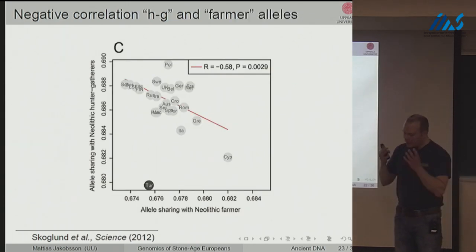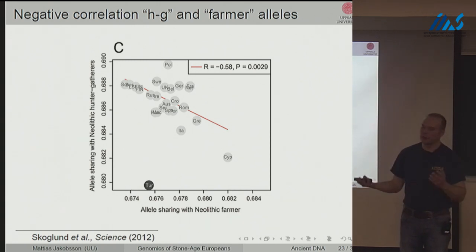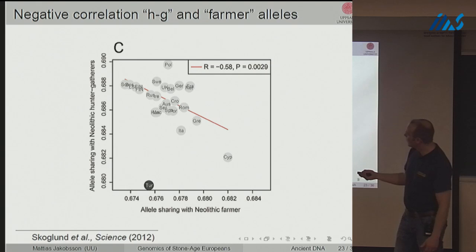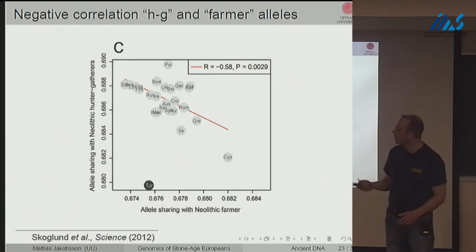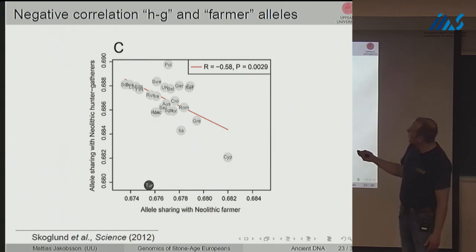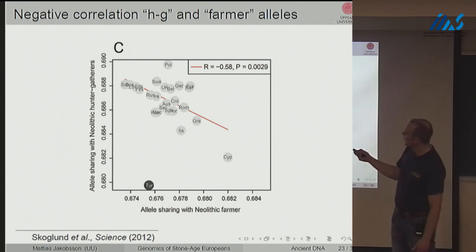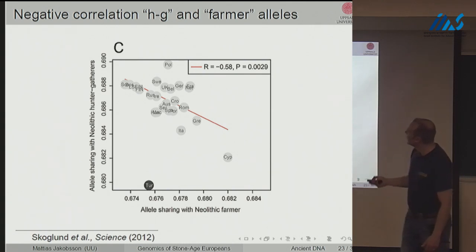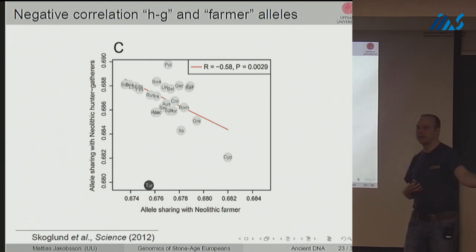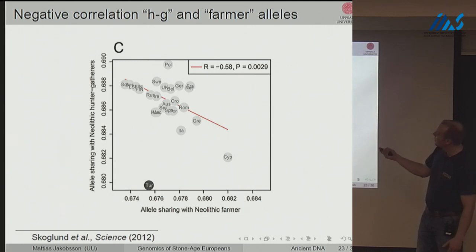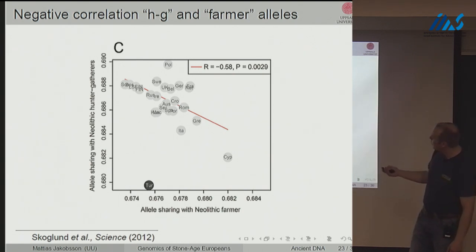We can also examine allele sharing with the hunter-gatherers on the y-axis and allele sharing with the farmers on the x-axis for modern-day individuals. There's a negative gradient: the more allele sharing with hunter-gatherers, the less with farmers and vice versa. This supports a model where modern-day groups are formed by mixing a fraction of hunter-gatherer ancestry and a fraction of farmer ancestry — further north means more hunter-gatherer ancestry, further south means more farmer ancestry. The outlier is modern-day people from Anatolia.